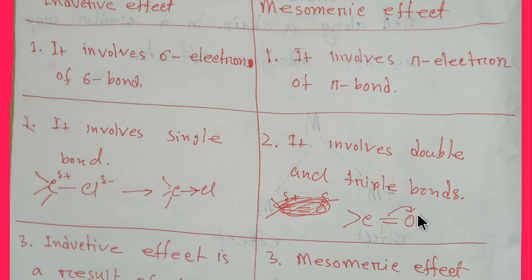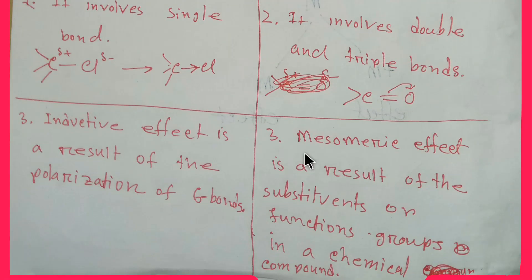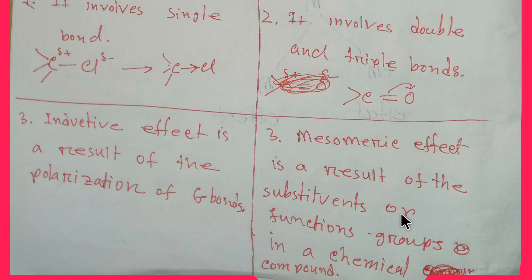The inductive effect is a result of the polarization of sigma bonds. The mesmeric effect is a result of the substituents or functional groups in a chemical compound.